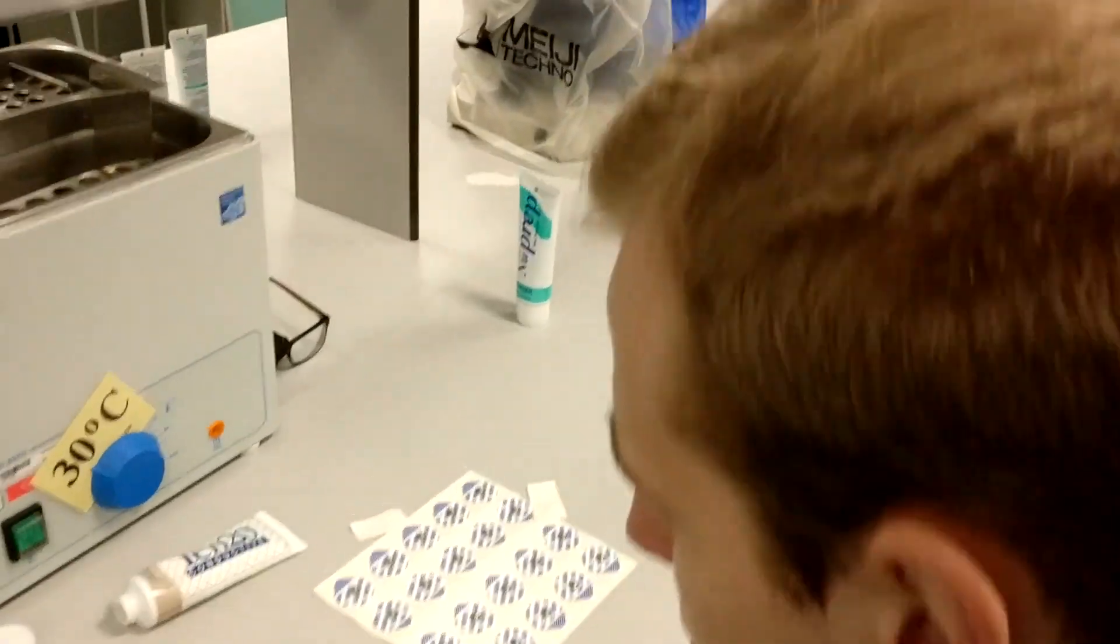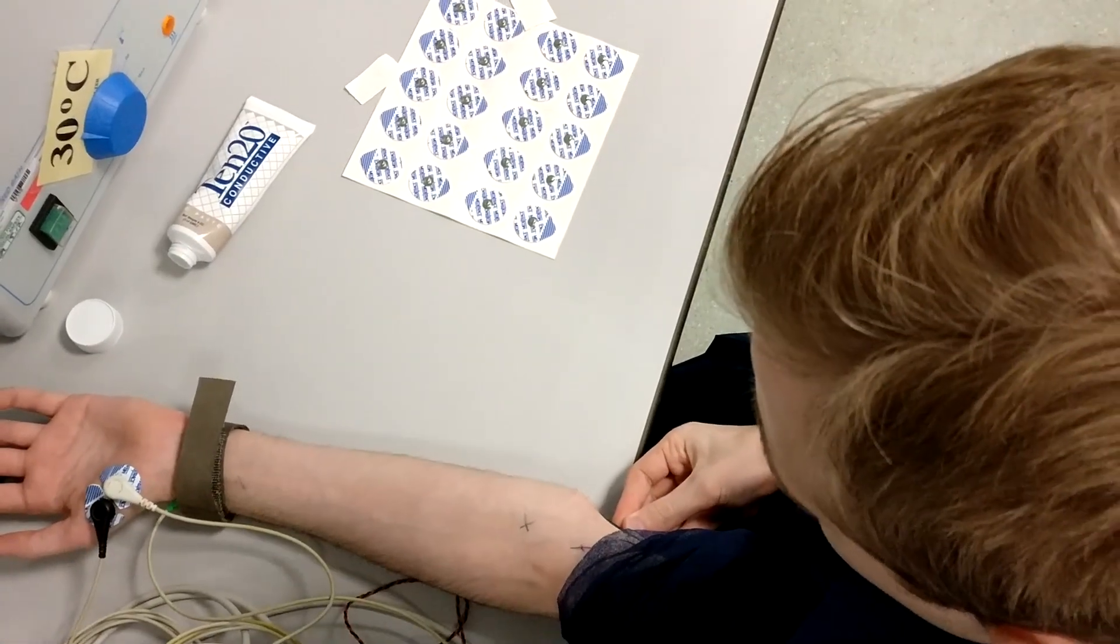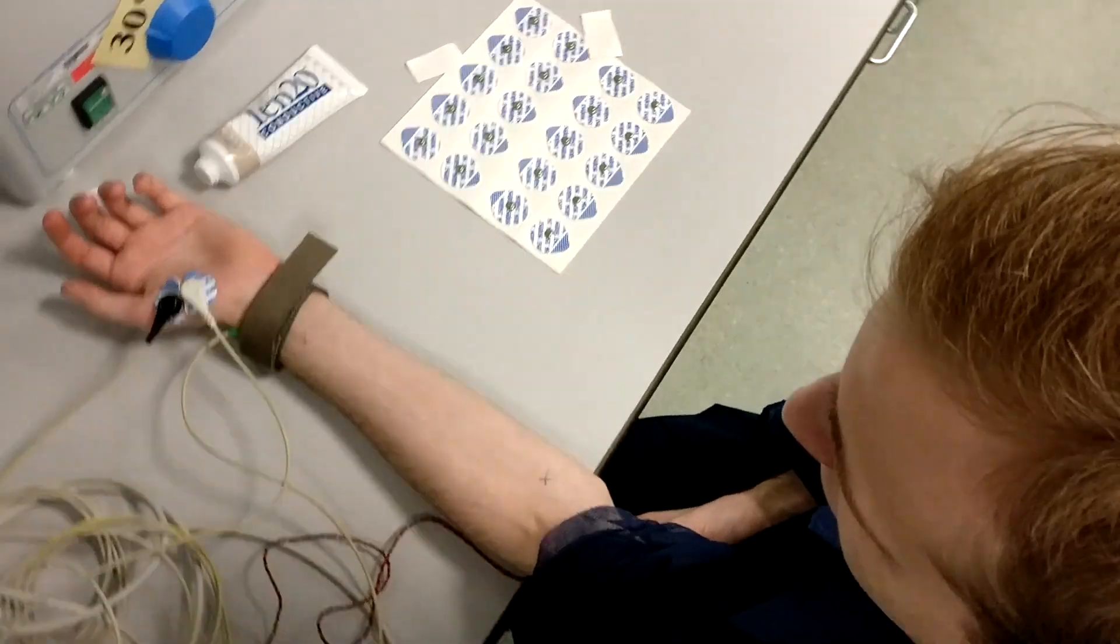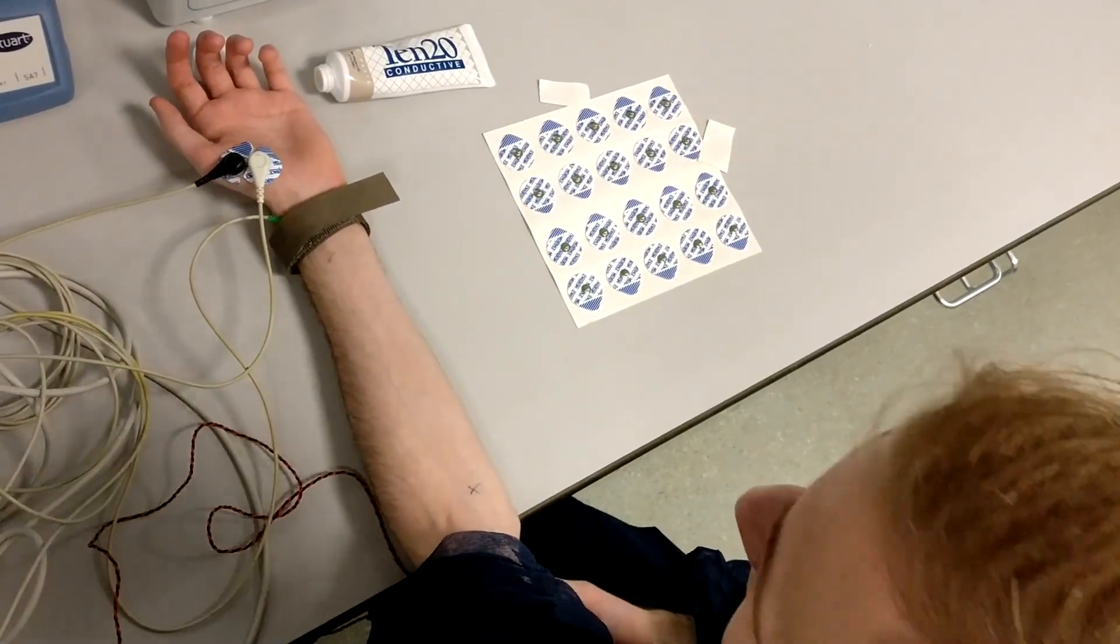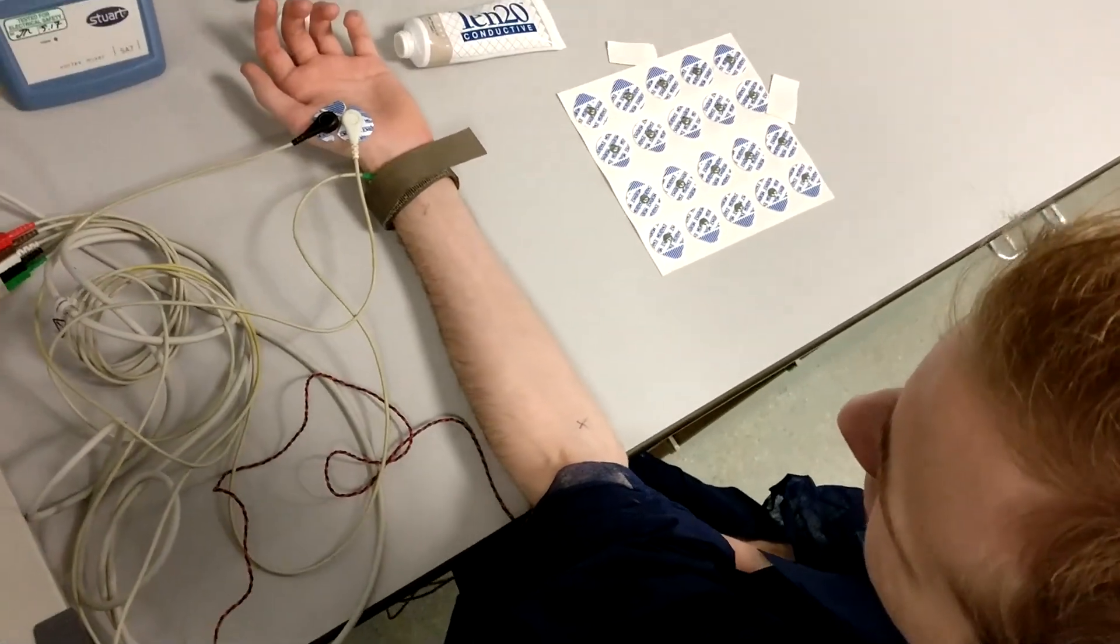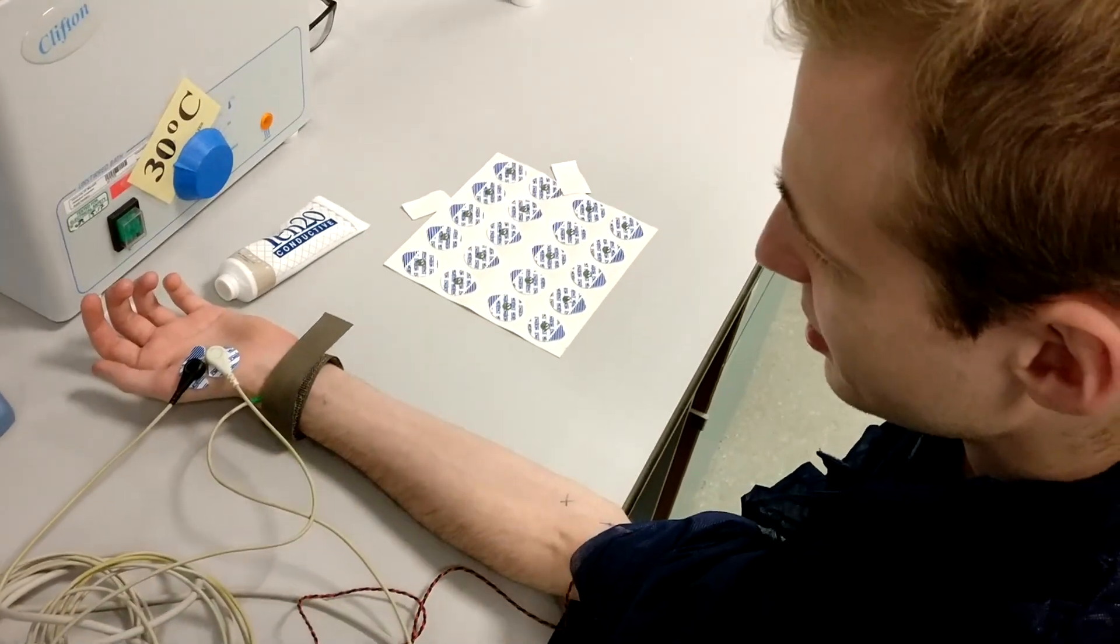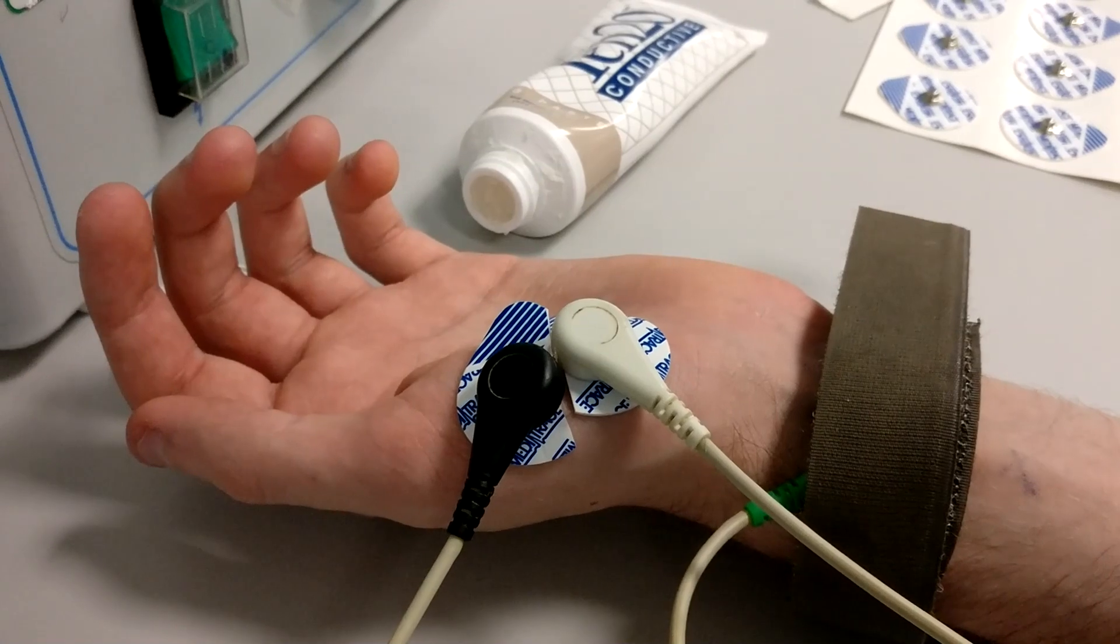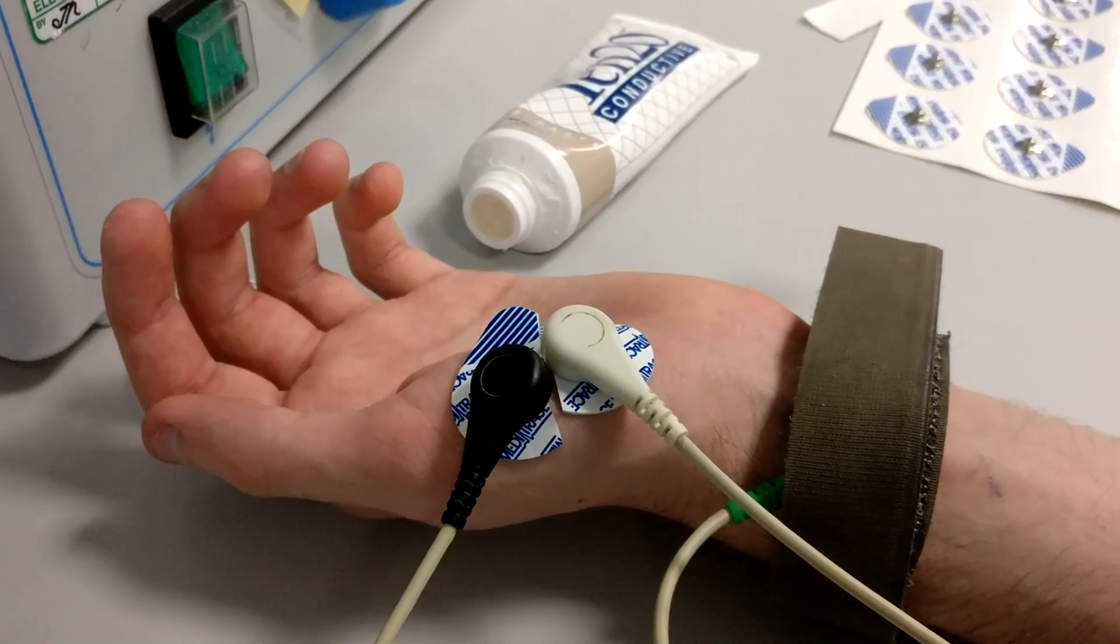This time I think we're going to try my ulnar nerve. Right, there we go. Have a look at that. You can see this is stimulating my ulnar nerve and it's causing my entire wrist to twitch. Getting some quite violent twitching there.